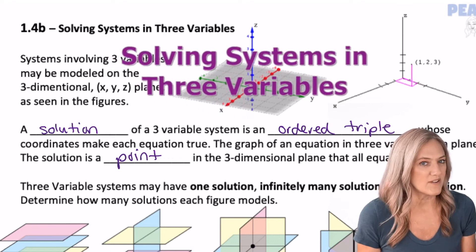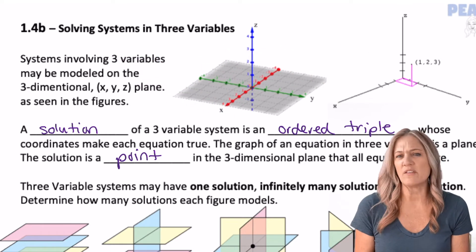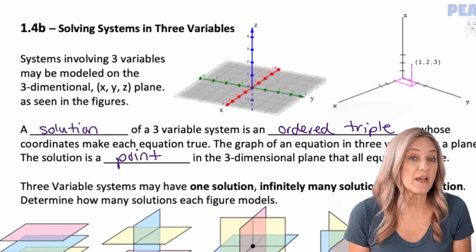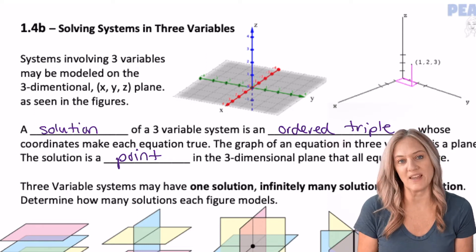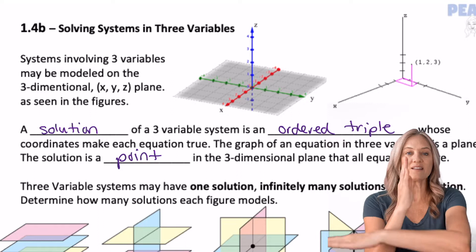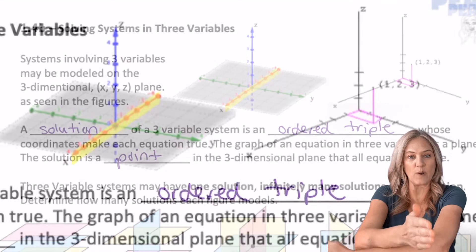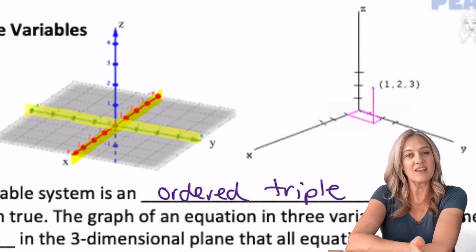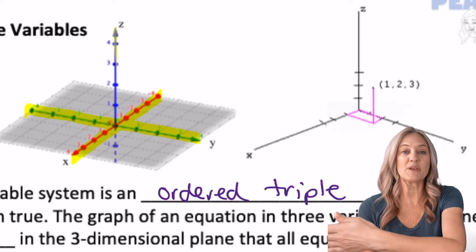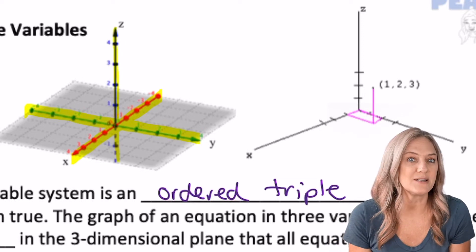Solving systems in three variables. Systems involving three variables may be modeled on the three-dimensional xyz plane. In the figure, we can see the x and y axes modeled in red and green. Then the z axis comes through the origin to create the third dimension.